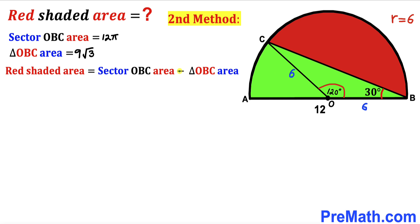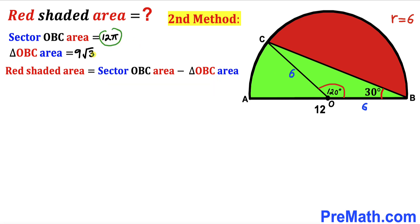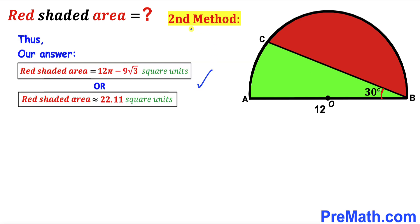For the final step using Method 2: red shaded area = sector OBC area − triangle OBC area = 12π − 9√3. We get the very same answer by using the second method as well. Thanks for watching and please don't forget to subscribe to the channel for more exciting videos.